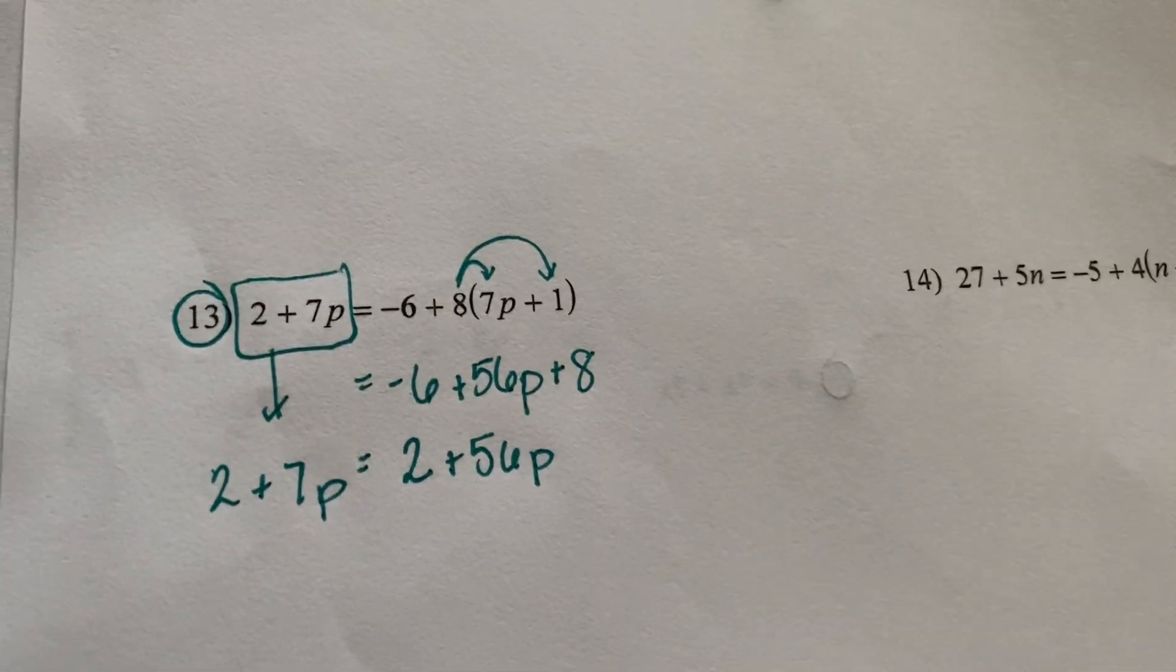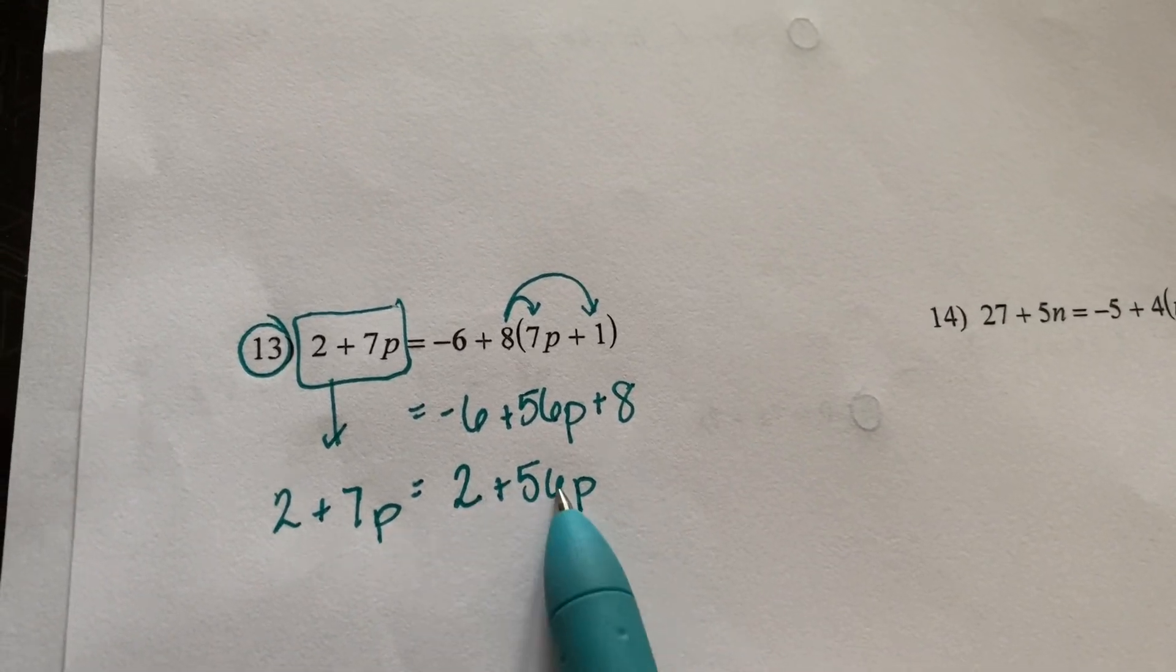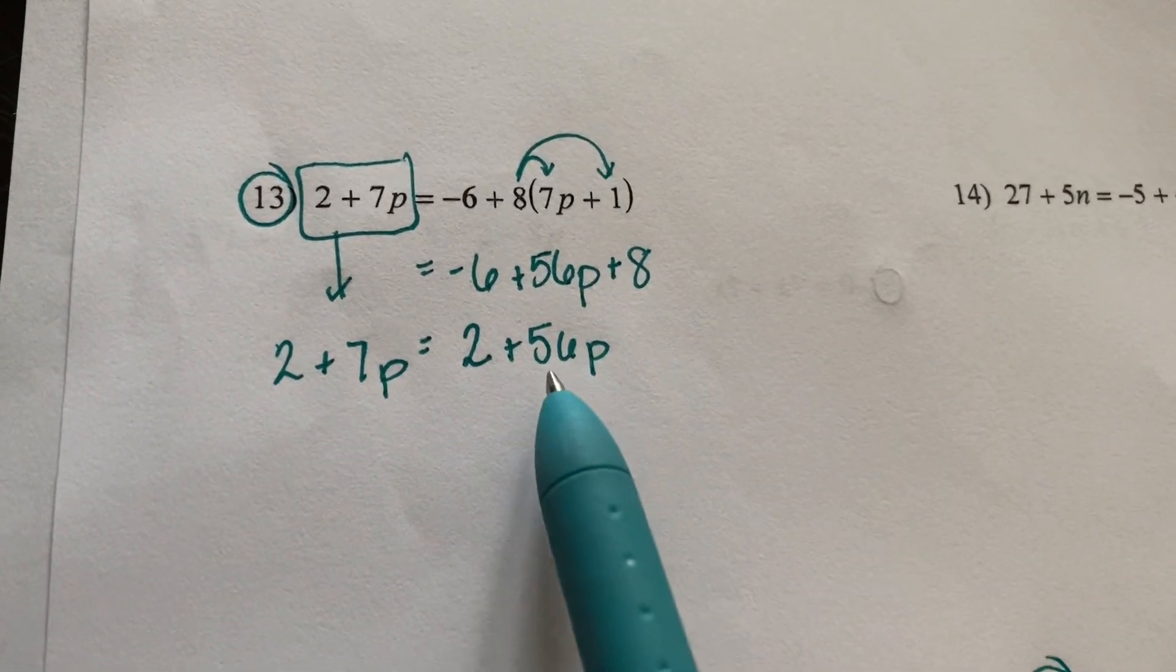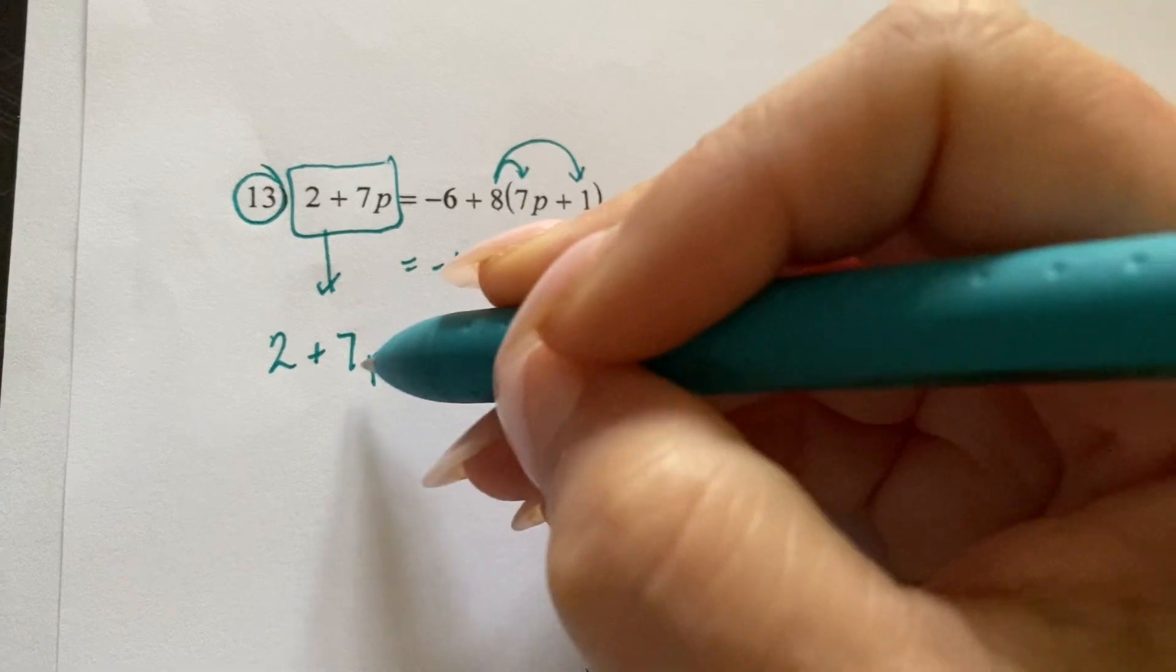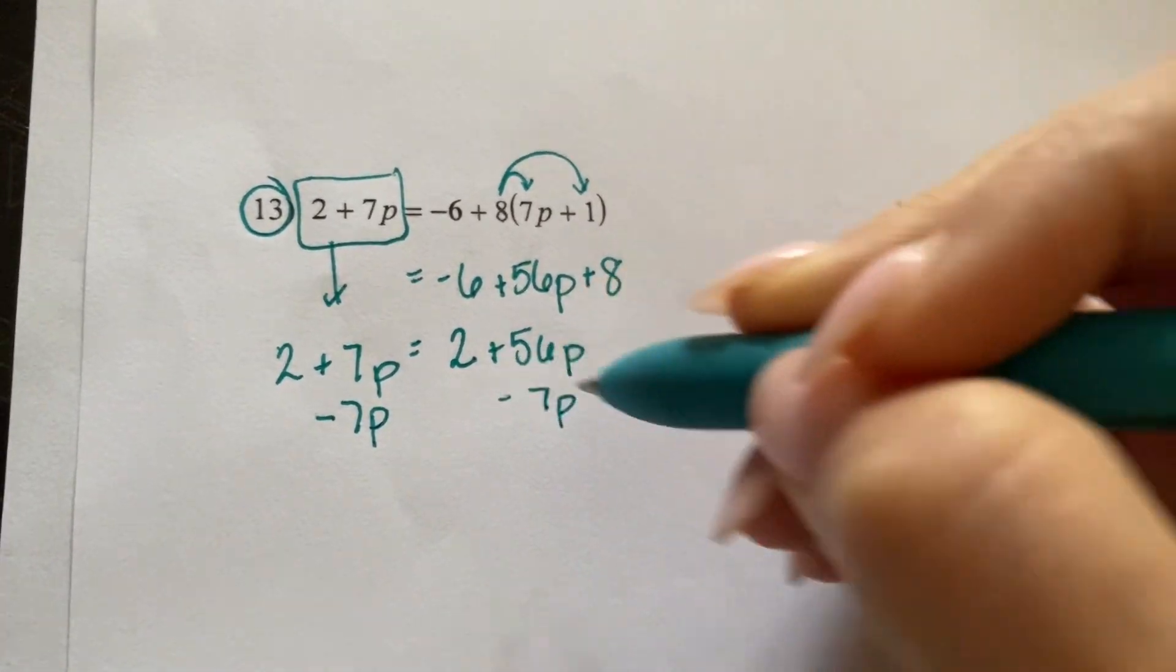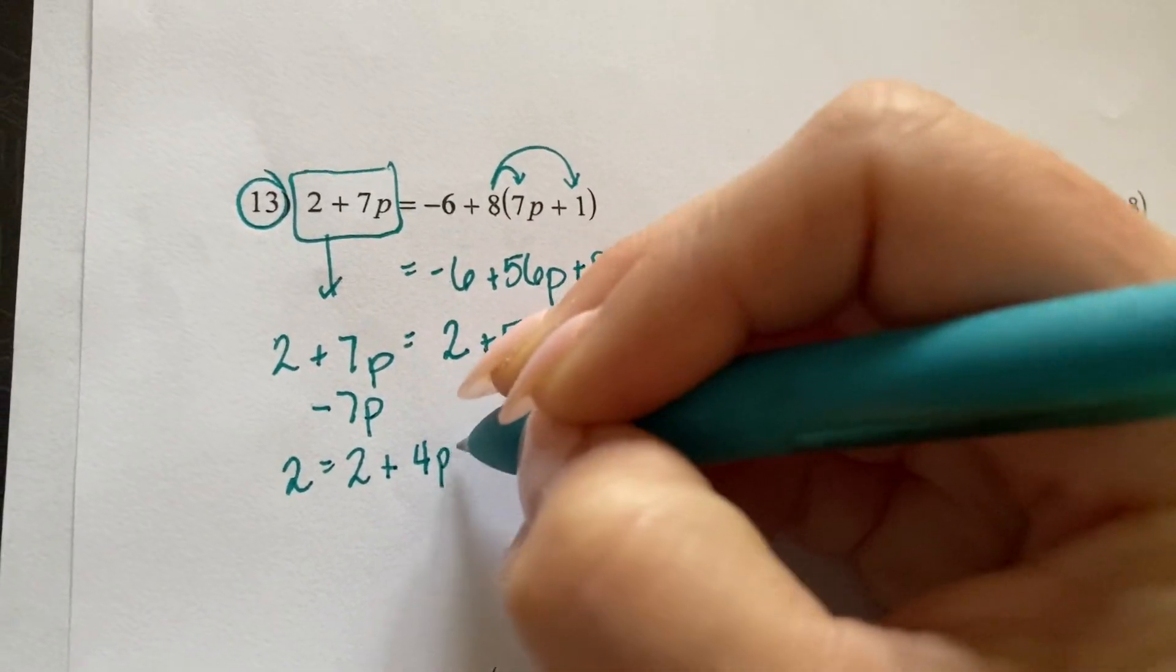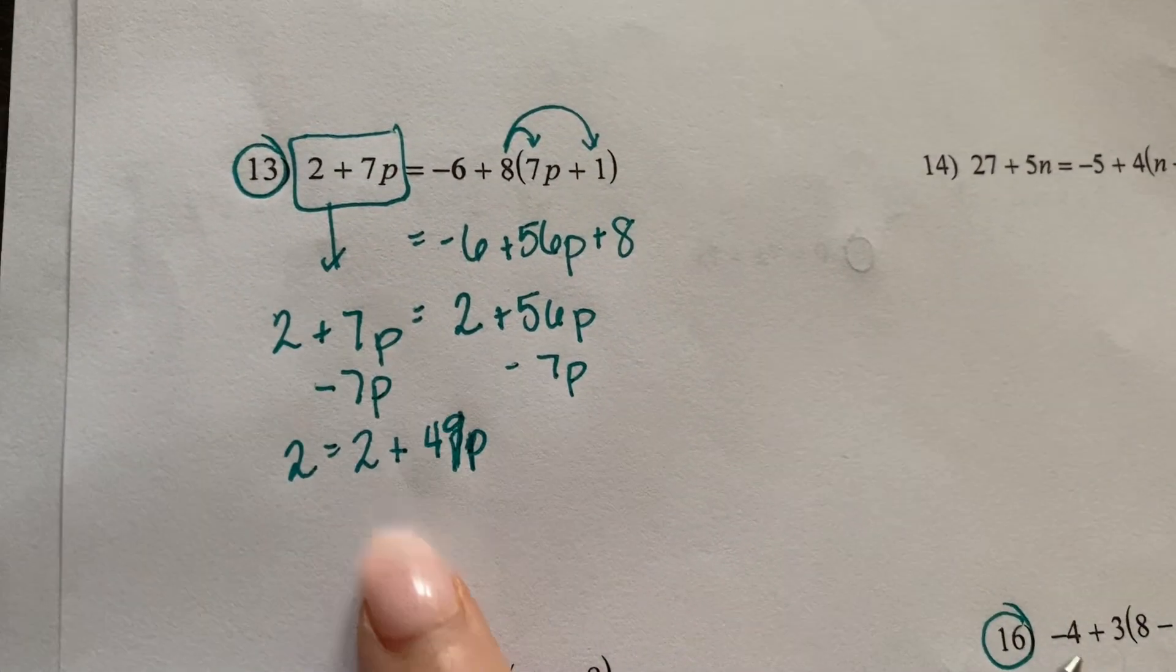Alright, so now I am going to transfer these numbers back and forth. Now, remember it doesn't matter which side I choose to bring things over to because I'll get the same answer. So I'm going to bring this 7 over here. And I'm going to get 2 equals 2 plus, that's going to be 49P. This is why we do math in pencil.